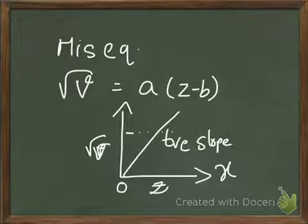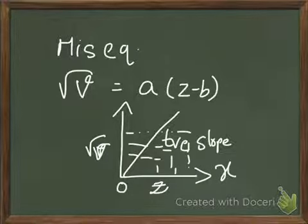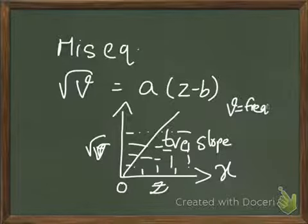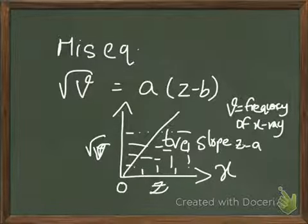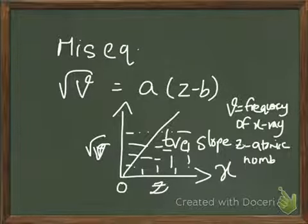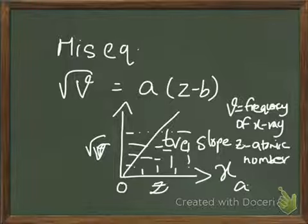Where v is the frequency of x-ray, z is the atomic number. A and b are constants.